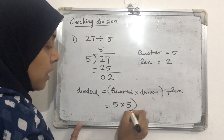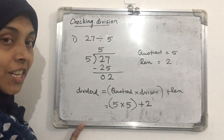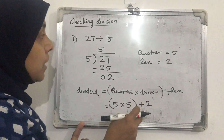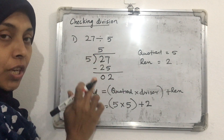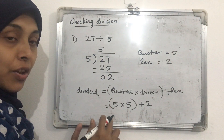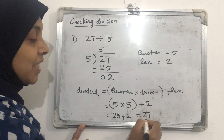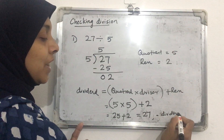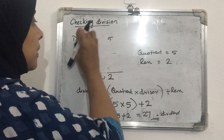After the calculation, if we get 27, then our division is correct; otherwise, if we get a different answer, the division is wrong. So: 5 into 5 is 25, then 25 plus the remainder 2 gives us 27. That is the dividend, so our division is confirmed correct.